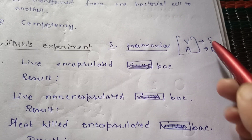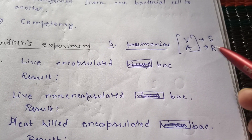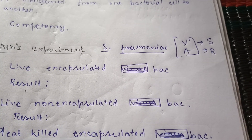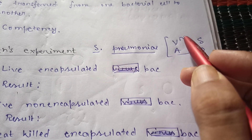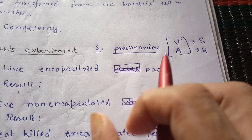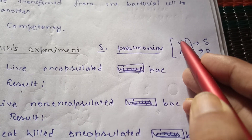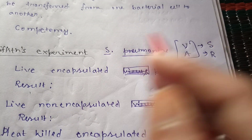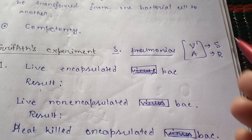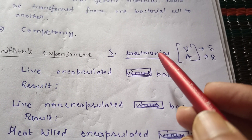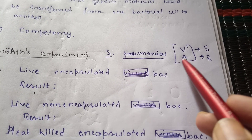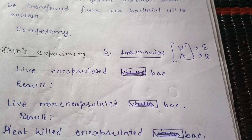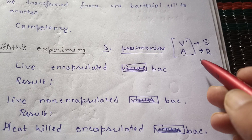The virulent strain is called S and the avirulent is R — S for smooth and R for rough. The virulent strain possesses a polysaccharide capsule to prevent phagocytosis, meaning this Streptococcus pneumoniae can cause pneumonia in mice. The avirulent strain does not have the capsule and therefore does not cause the disease.